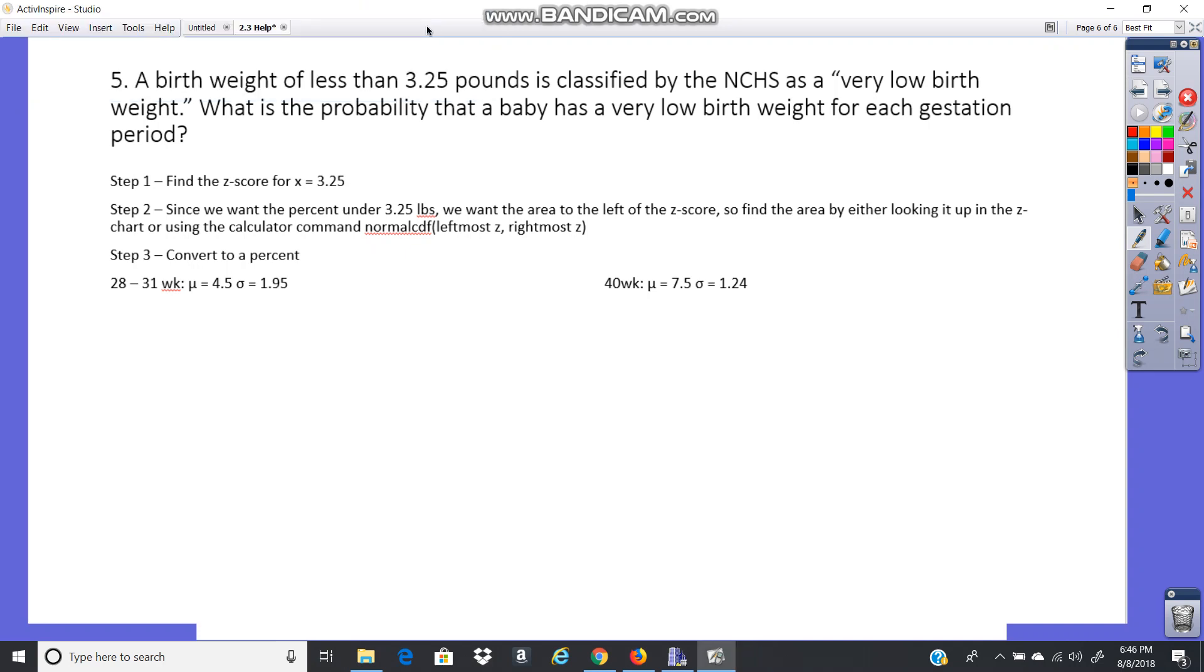Okay, and our last little part here says a birth weight of less than 3.25 pounds is classified as a very low birth weight. What is the probability that a baby has a very low birth weight for each gestation period?